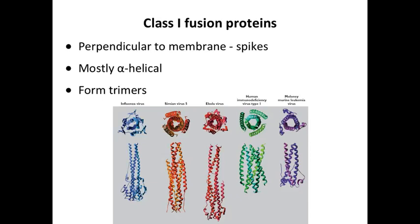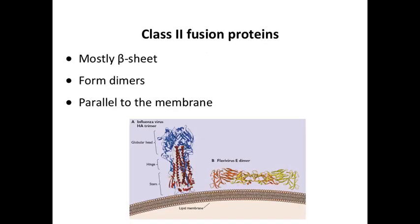They all exist on the surface folded up, burying the fusion peptide, and they all rearrange at low pH. These are called class 1 fusion proteins. They're typically perpendicular to the membrane, mostly alpha helical as you can see, and they all form trimers. There are a couple of other kinds of fusion proteins.